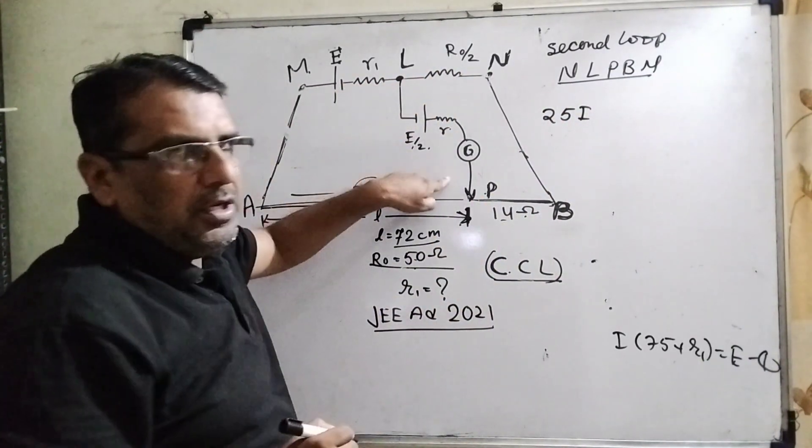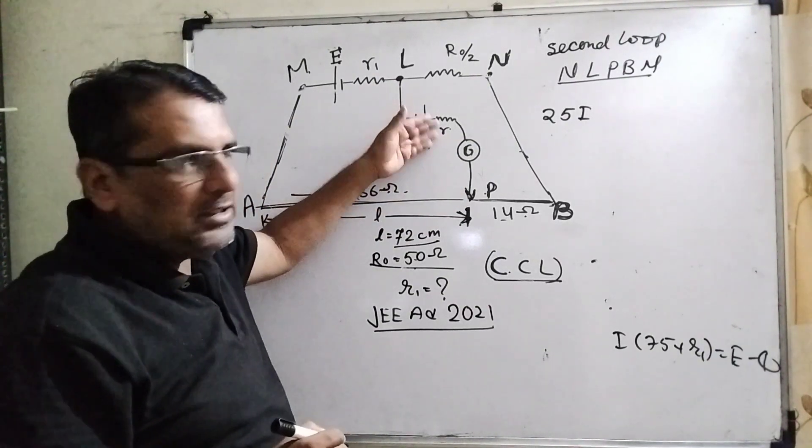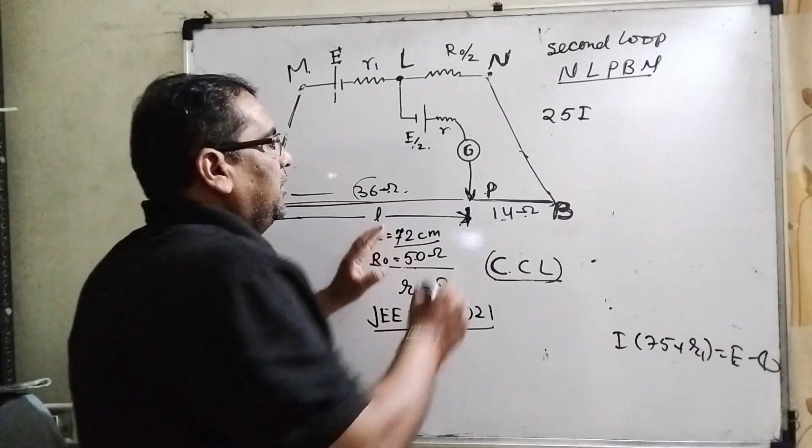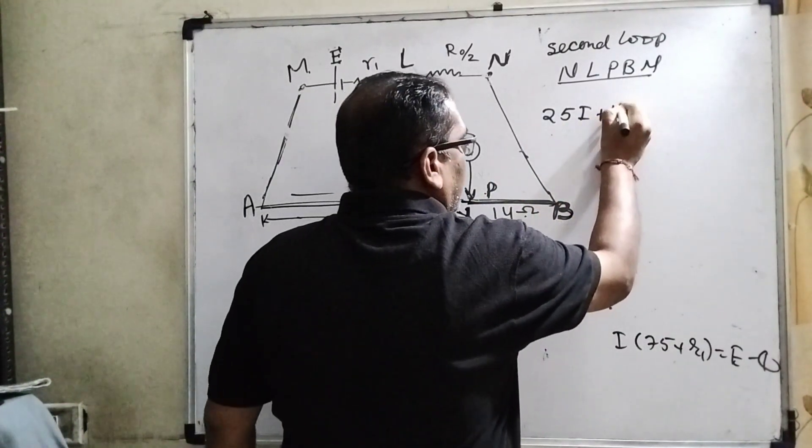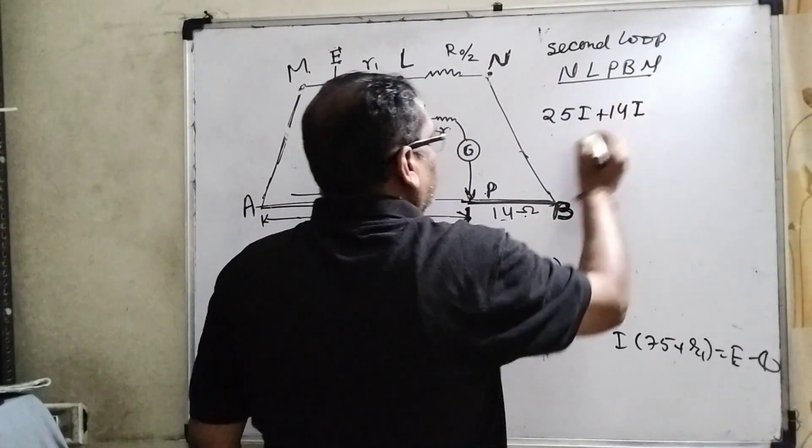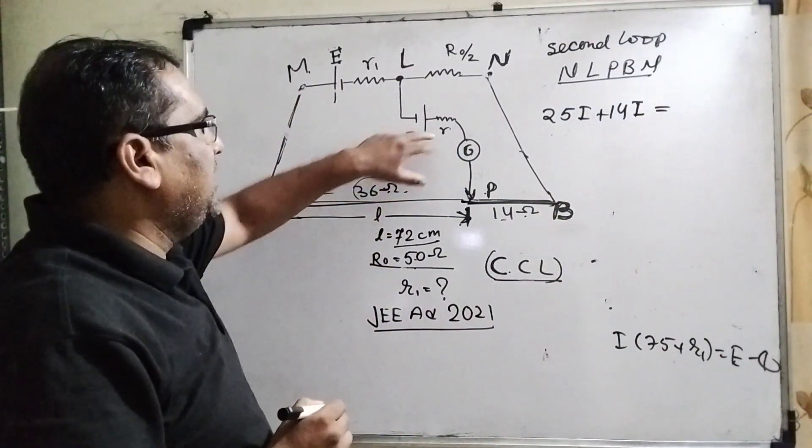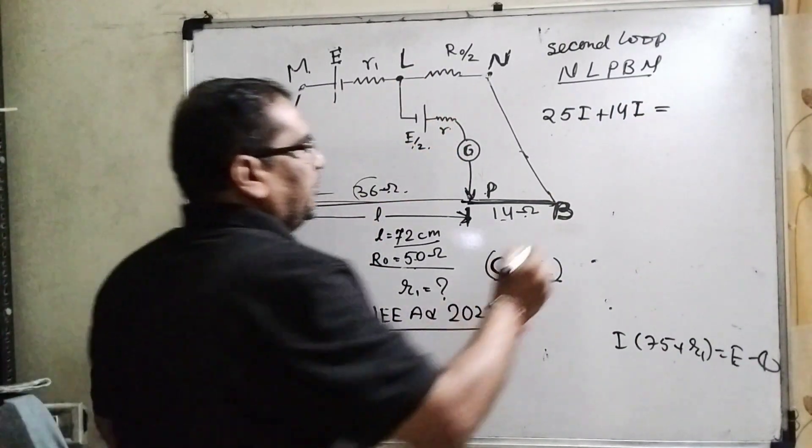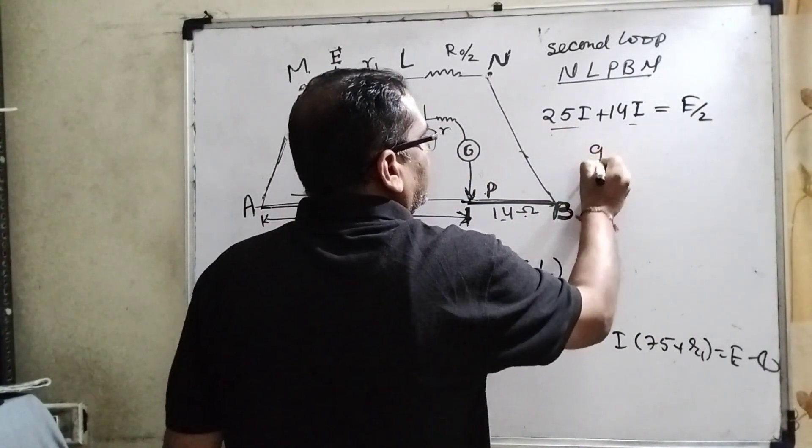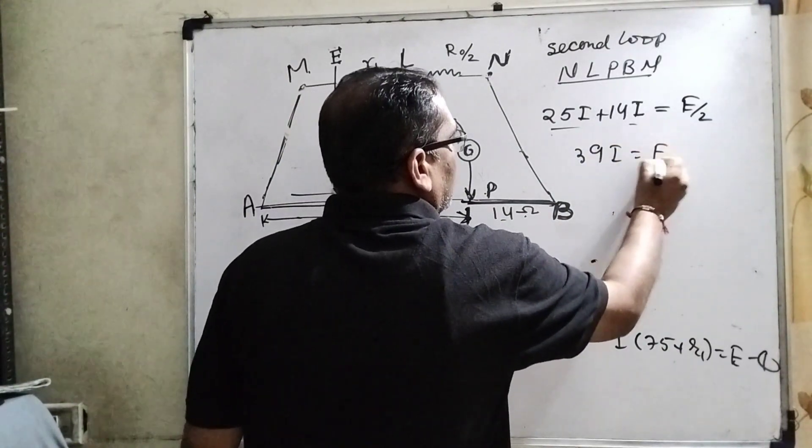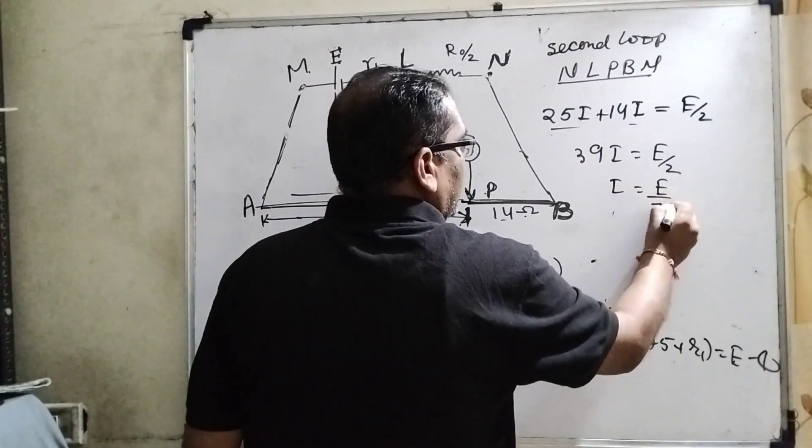Here the resistance R0 by 2 means 25I. Remember, no current will flow in LP, so 0 times resistance gives 0. Only the remaining point PB has resistance 14. Multiply by current I, and EMF present in this closed mesh is E by 2. Total is 39I equals E by 2.